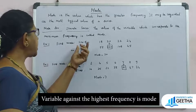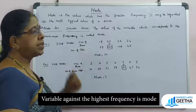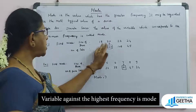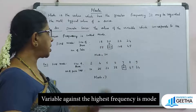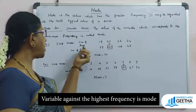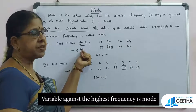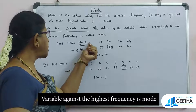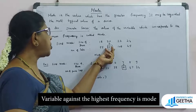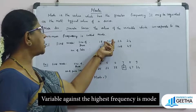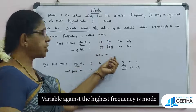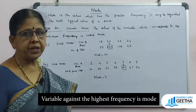In the first example, we have size of dress and number of sets. The number of sets is the frequency, and size is the variable x. The highest frequency is 120, and the corresponding variable value is 20. Therefore, mode is equal to 20.